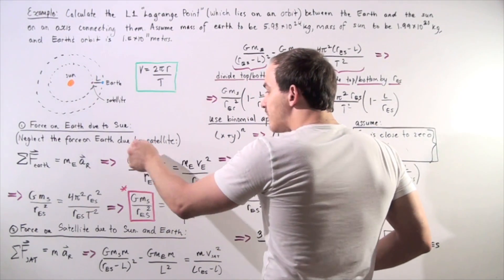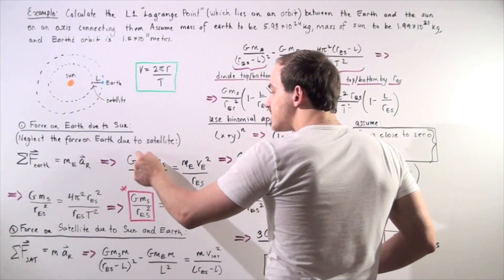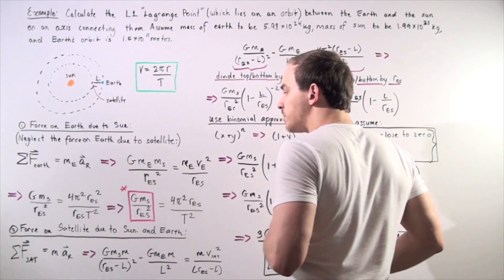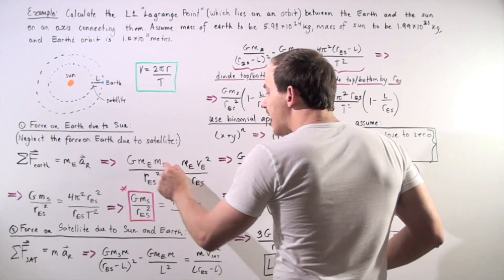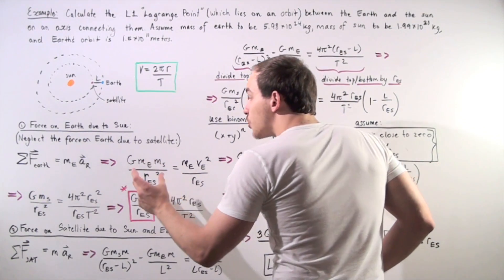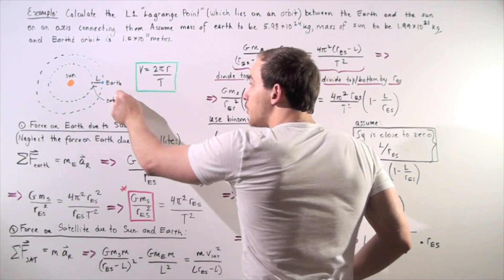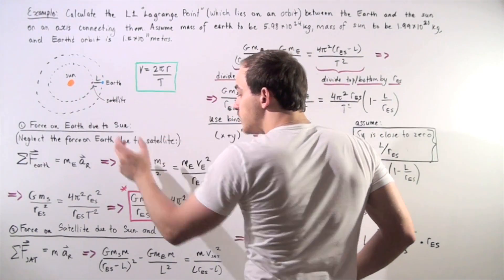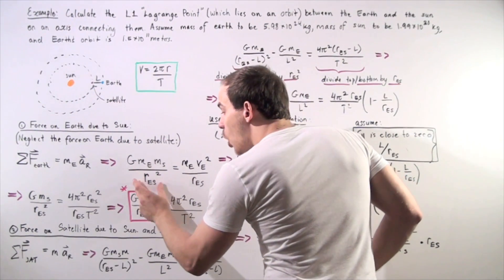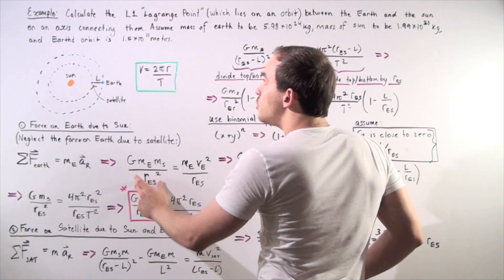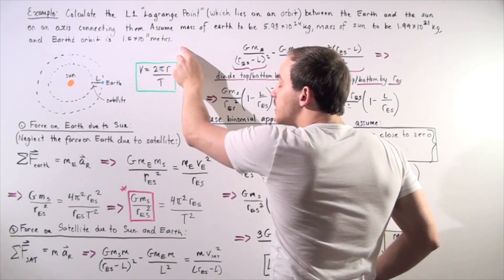The sum of all forces acting on the Earth equals the mass of the Earth multiplied by the radial acceleration of the Earth. We rewrite the left side using the law of universal gravitation: the gravitational constant G multiplied by the mass of the Earth multiplied by the mass of the Sun, divided by the radius from the Earth to the Sun, squared. We know what this value is, but for now we leave it as a variable.